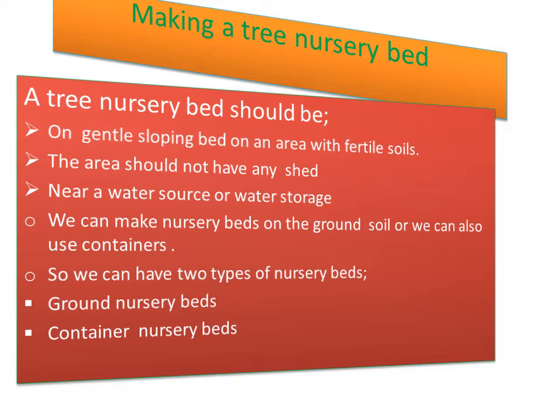How to make a tree nursery: there are two types of tree nurseries. Your tree nursery should be on a gentle sloping bed in an area with fertile soils. Sloping means it allows water to flow from the higher level to the lower part, and the soils for making tree nursery beds should be fertile.